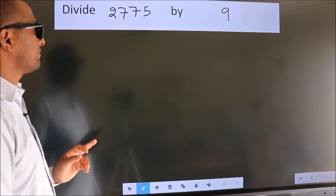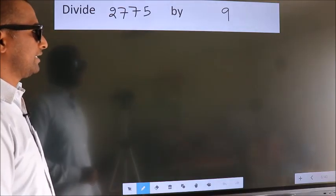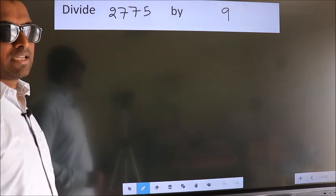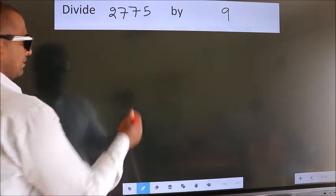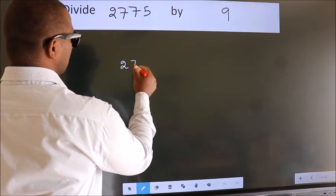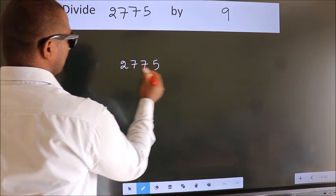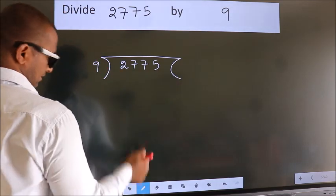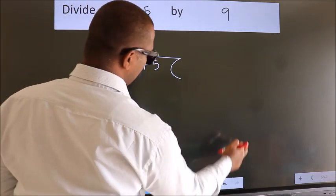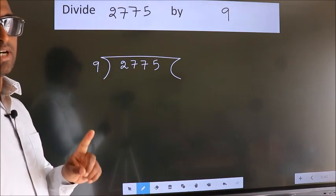Divide 2775 by 9. To do this division, we should frame it in this way. 2775 here, 9 here. This is your step 1.